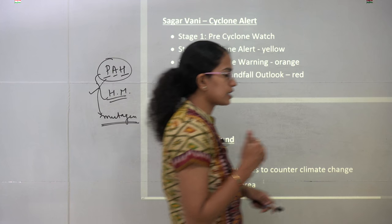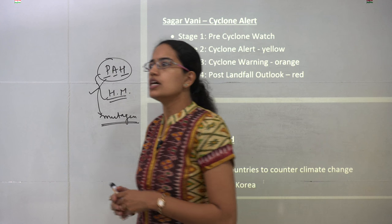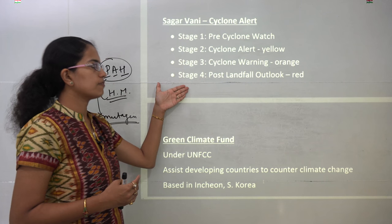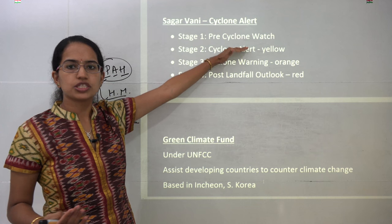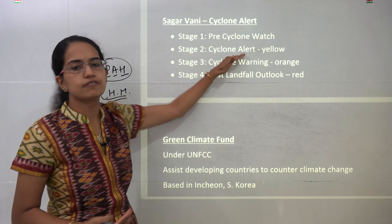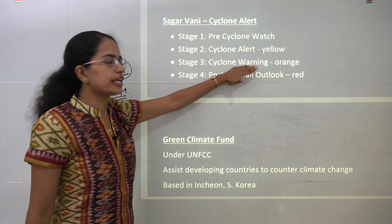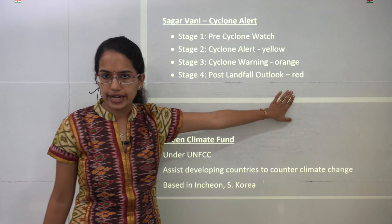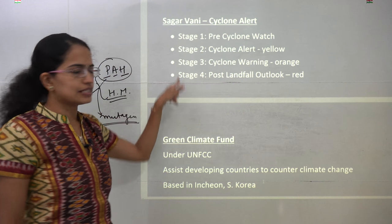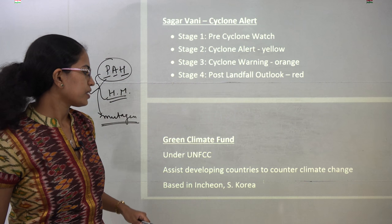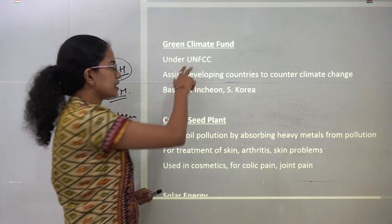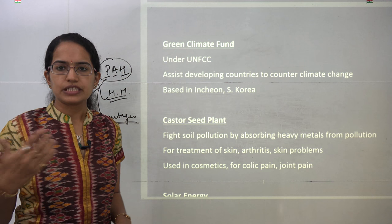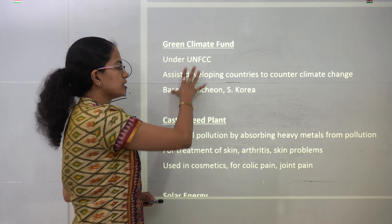Sagarwani is a new government of India effort for cyclone alerts, divided into 4 stages: Stage 1 is the pre-cyclonic watch; Stage 2 is the cyclone alert issued in yellow; Stage 3 is the cyclone warning issued in orange; and Stage 4 is the post-landfall outlook given in red. The color codes, names, and stages are very important. The Green Climate Fund comes under UNFCCC and works to counter climate change problems; it is headquartered in Incheon, South Korea.